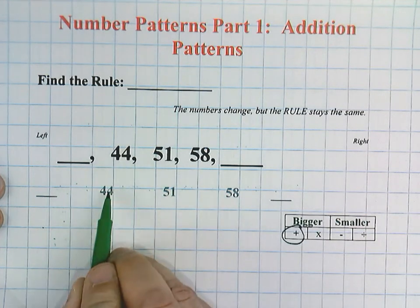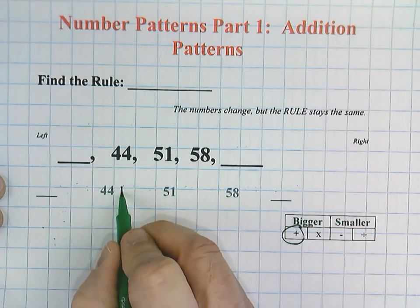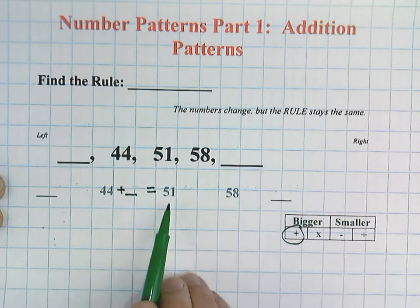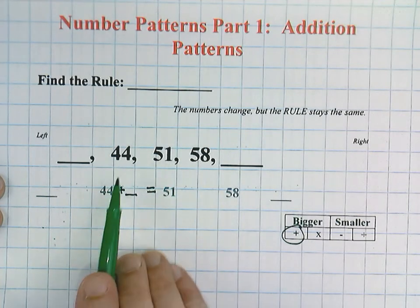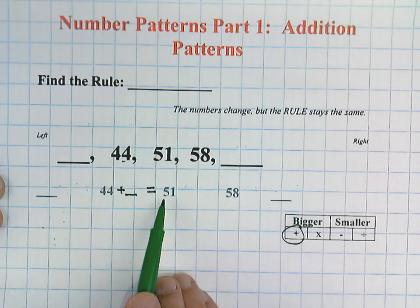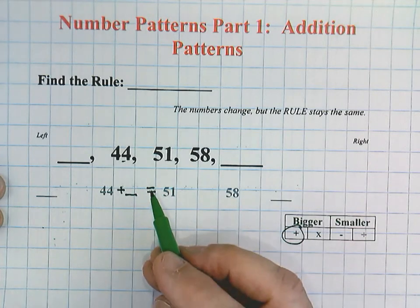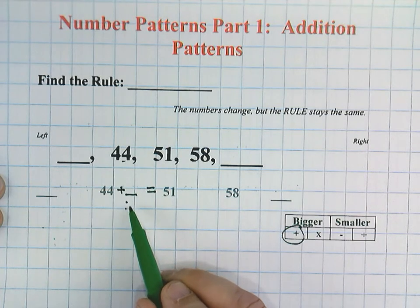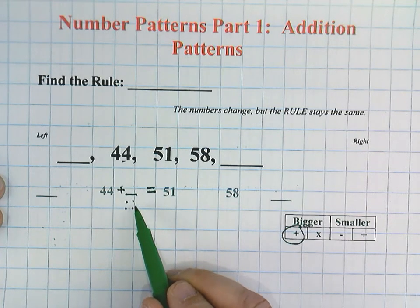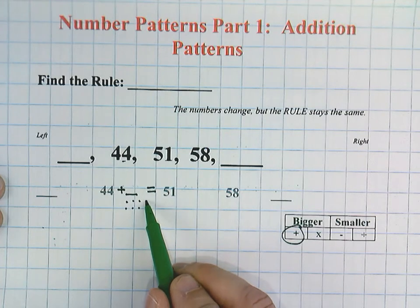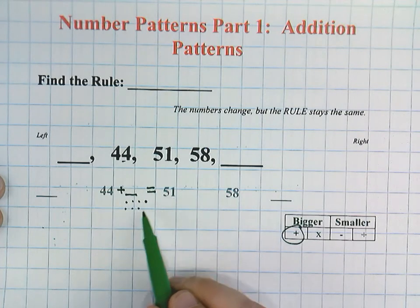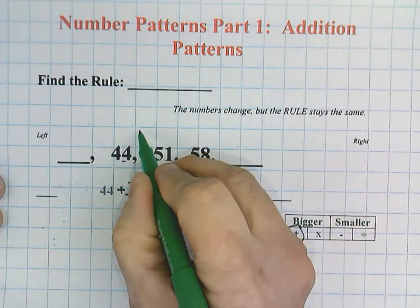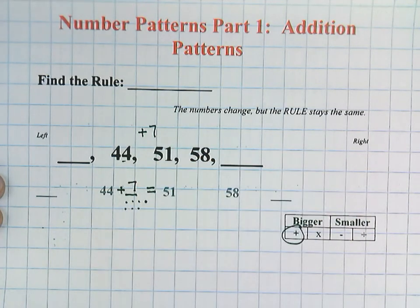I'm going to start with 44 plus blank equals 51. We're using our information to write an equation. I'll show you a pin dot strategy for this one. You could say 44, 45, 46, 47, 48, 49, 50, 51. I stopped when I said 51, and I'm counting 7 dots. So we're showing a plus 7 rule.